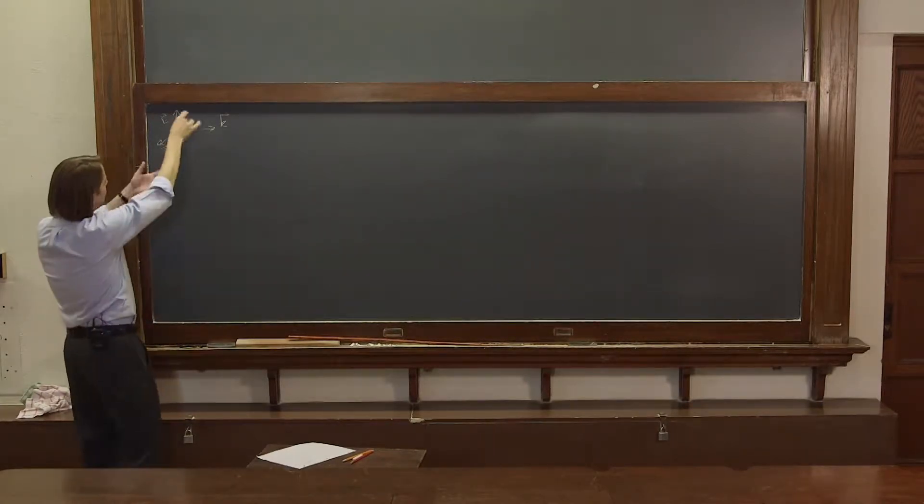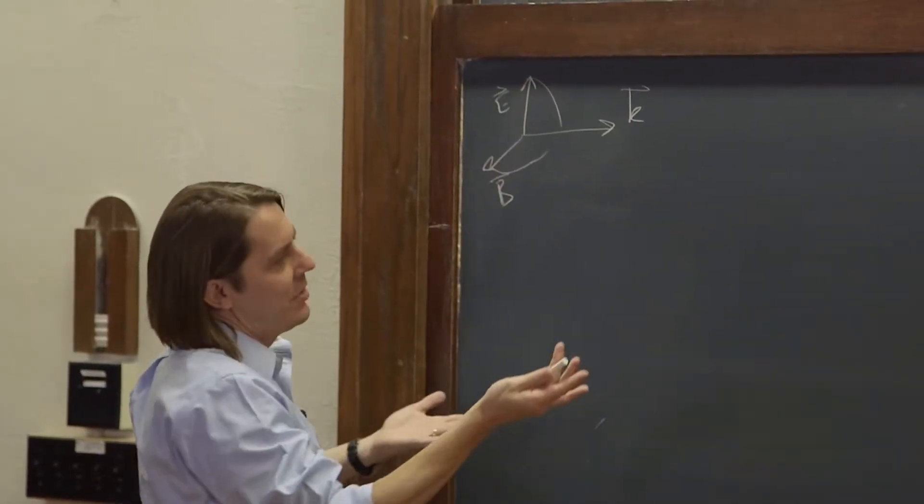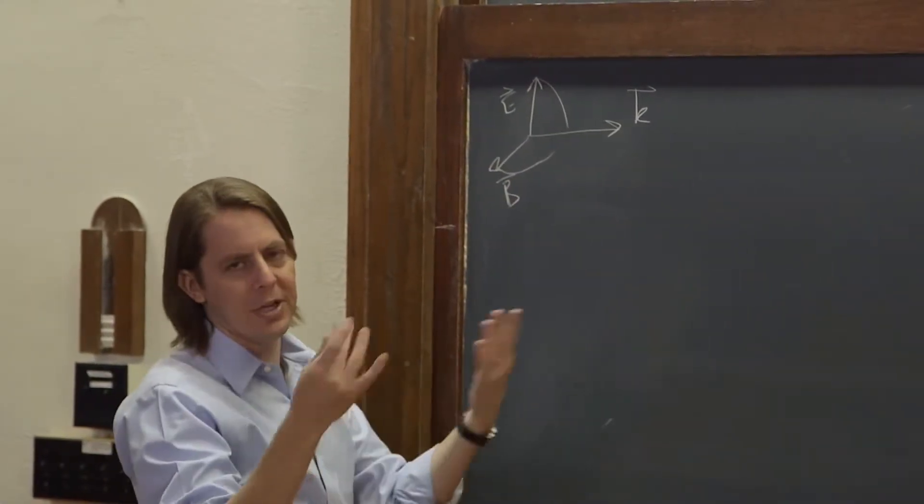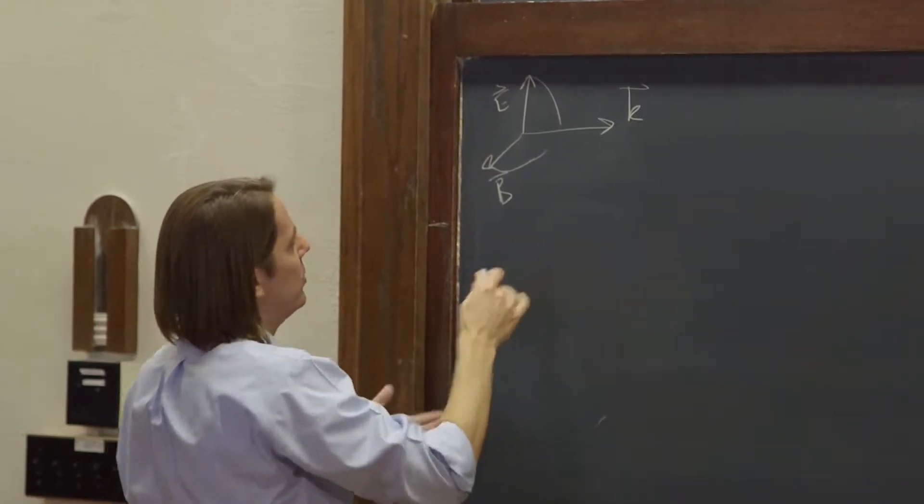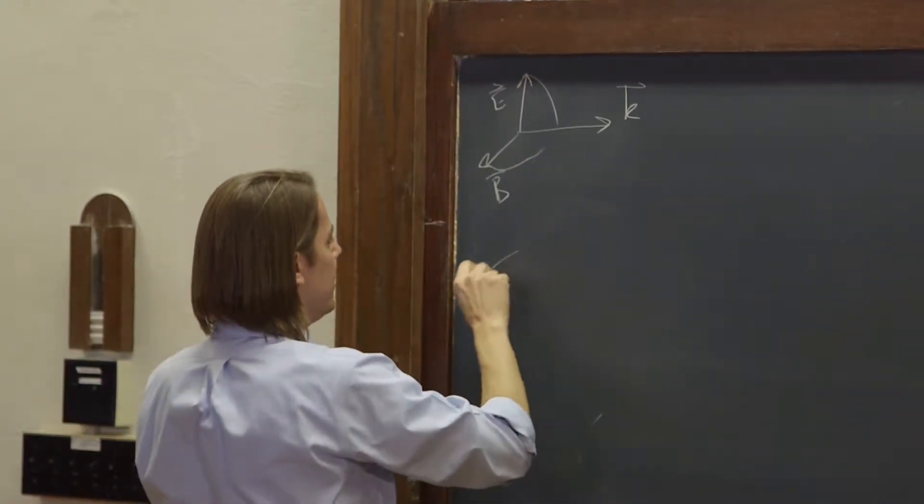So the question is, does it make a difference if E is up and B is sideways and K is that way? And if this thing is just propagating in empty space, well, let's see, E cross B has to be K. I could also draw it like this,